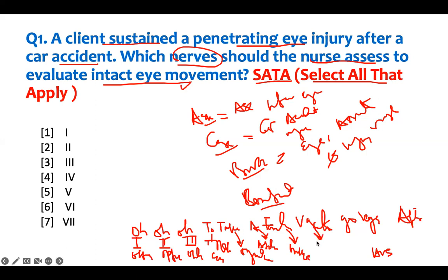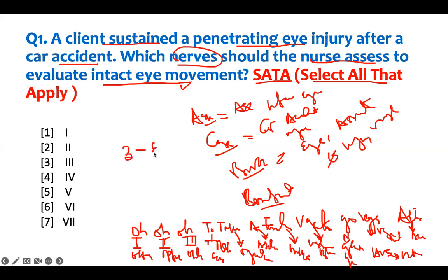CN VI is abducens — eye movement. CN VII is facial — motor facial expression. CN VIII is vestibulocochlear — that means balance. CN IX is glossopharyngeal — that's swallowing and gag reflex. CN X is vagus — also involved in swallowing. CN XI is accessory — shrugging of your shoulder. CN XII is hypoglossal — tongue movement. There are three cranial nerves involved in eye movement that control your eyeball and your gaze.